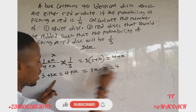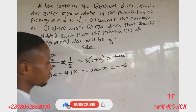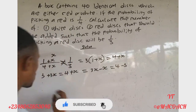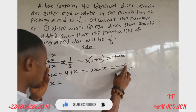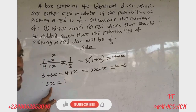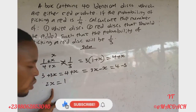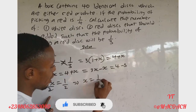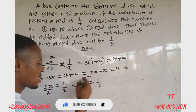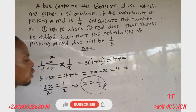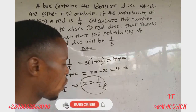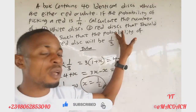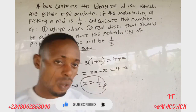So 2s = 1, and dividing both sides by 2: s = 1/2. Therefore s = 1/2. This is the number of red disks added so that the former probability gives the new probability of 1/3. This is the solution to question two.